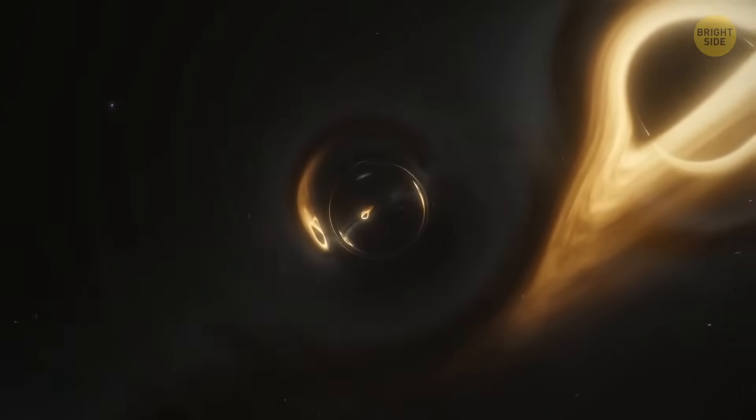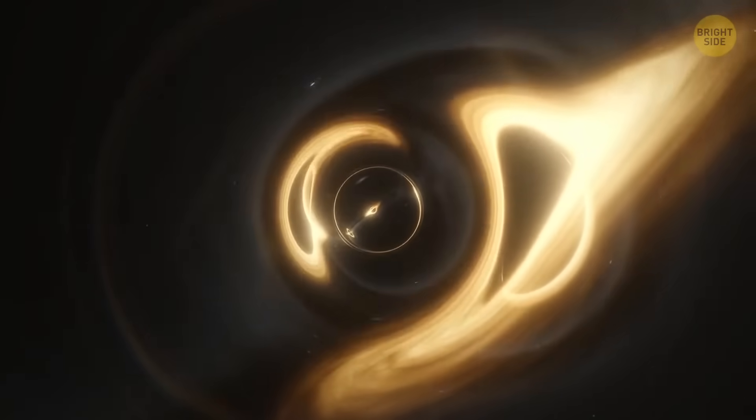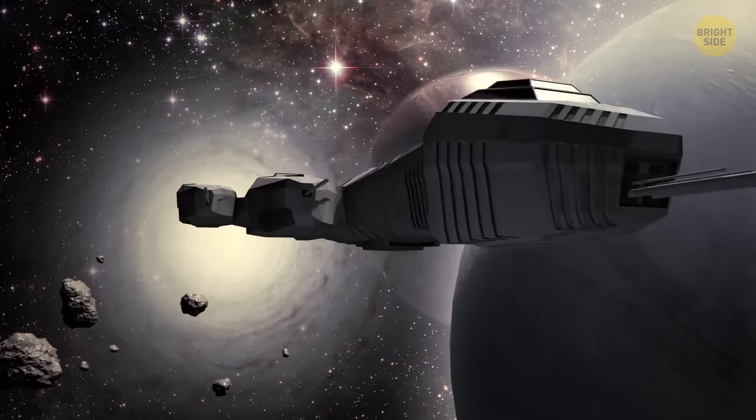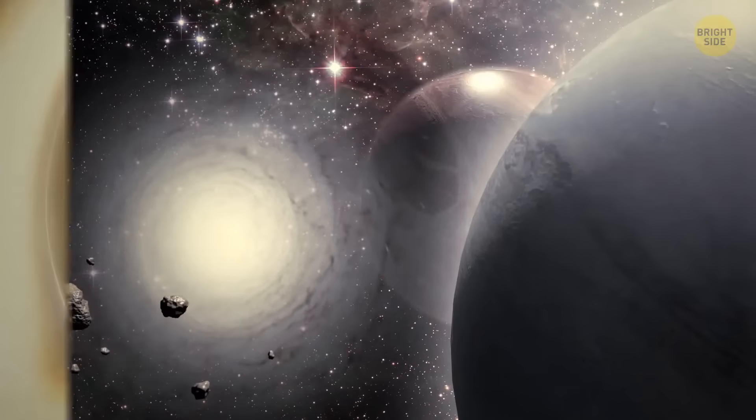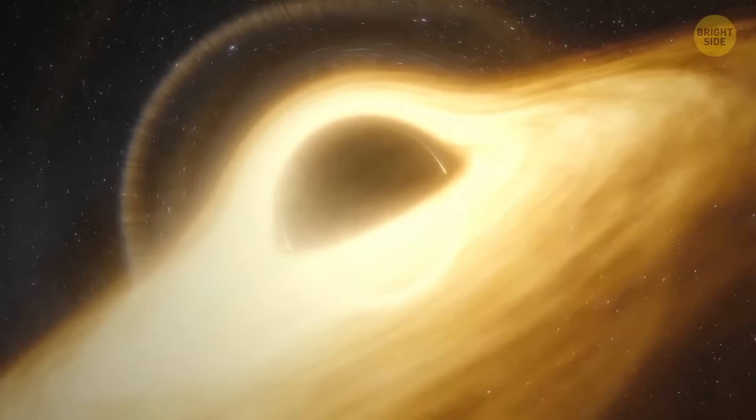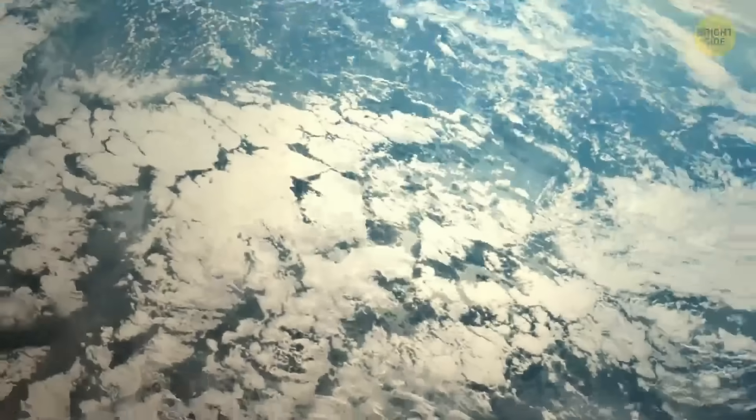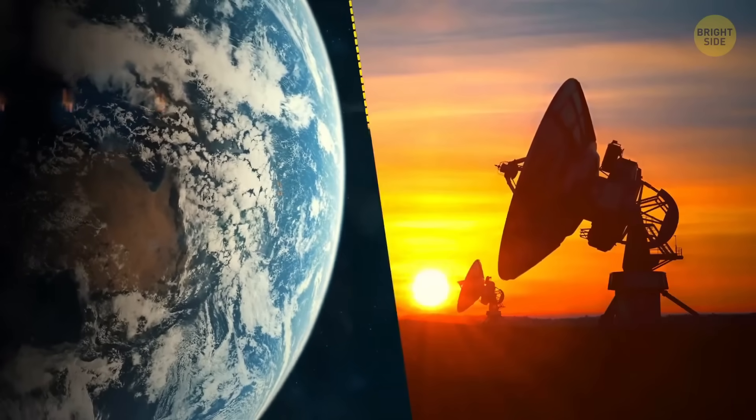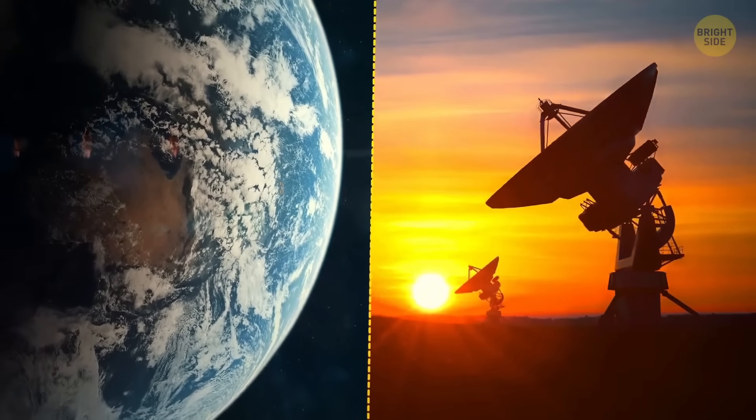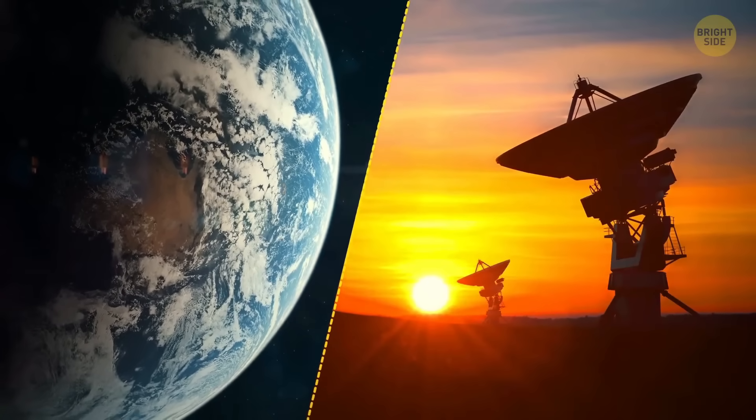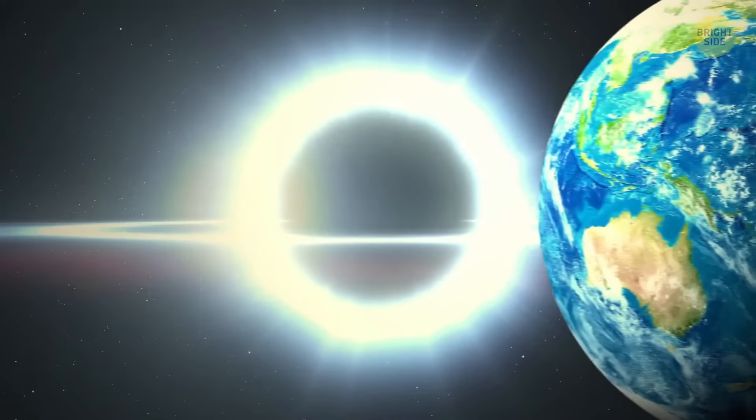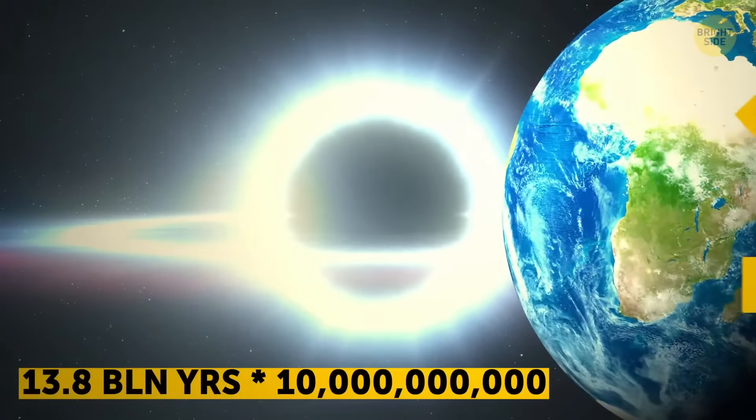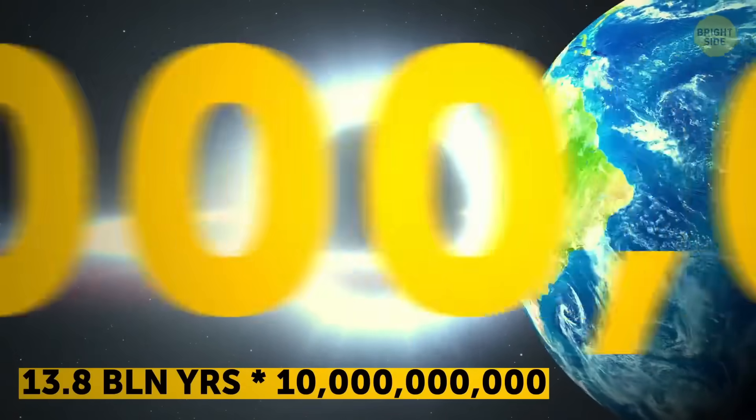Sometimes black holes even devour others of their kind that happen to be too close to them. Before you get on a spaceship to escape to some safe, no-black hole galaxy, here's some good news. Even though they're supermassive, they don't have a radius large enough to destroy Earth. And even the hungriest of them are safe to watch from a distance. No black hole should come closer to our planet than the Sun for as long as the universe has existed multiplied by 10 billion times.